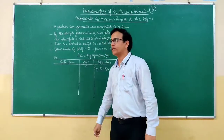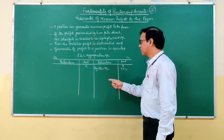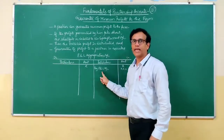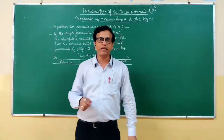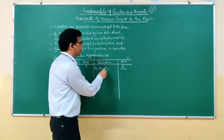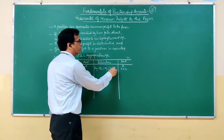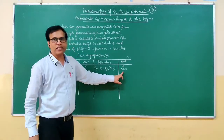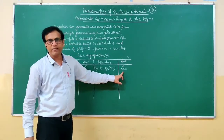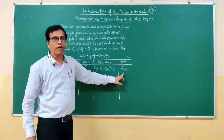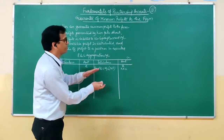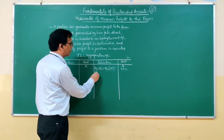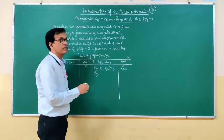For this, the profit and loss appropriation account will be prepared. We will transfer the amount of profit actually earned by the firm from the profit and loss account. If it is less than the amount guaranteed to the firm by a partner, then the difference — that shortage amount — we will take from that partner.